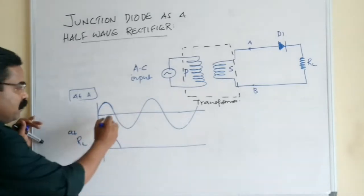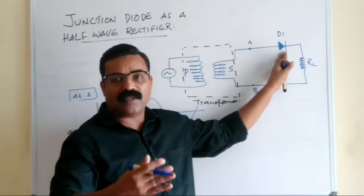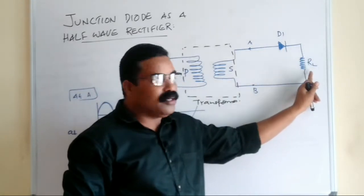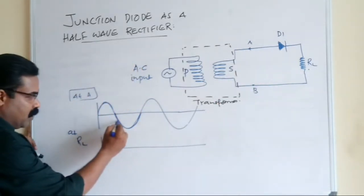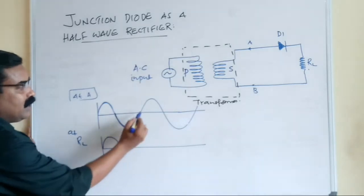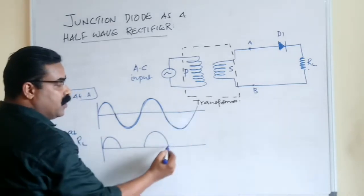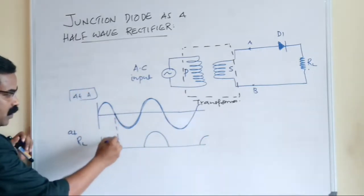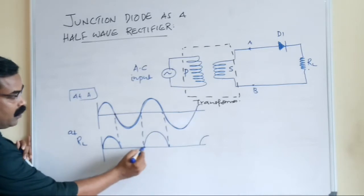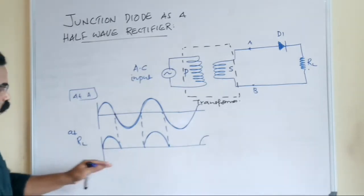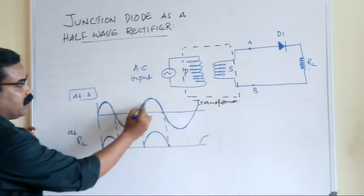When A becomes negative, the diode is reverse biased. During reverse bias, the diode will not allow current to pass through, so no current will be available at the load resistance. When A becomes positive again, current will be available; when A becomes negative, no current — and this pattern repeats. So at RL, current flows only when A is positive. This means you do not have full wave rectification; you have only half wave rectification in each cycle.